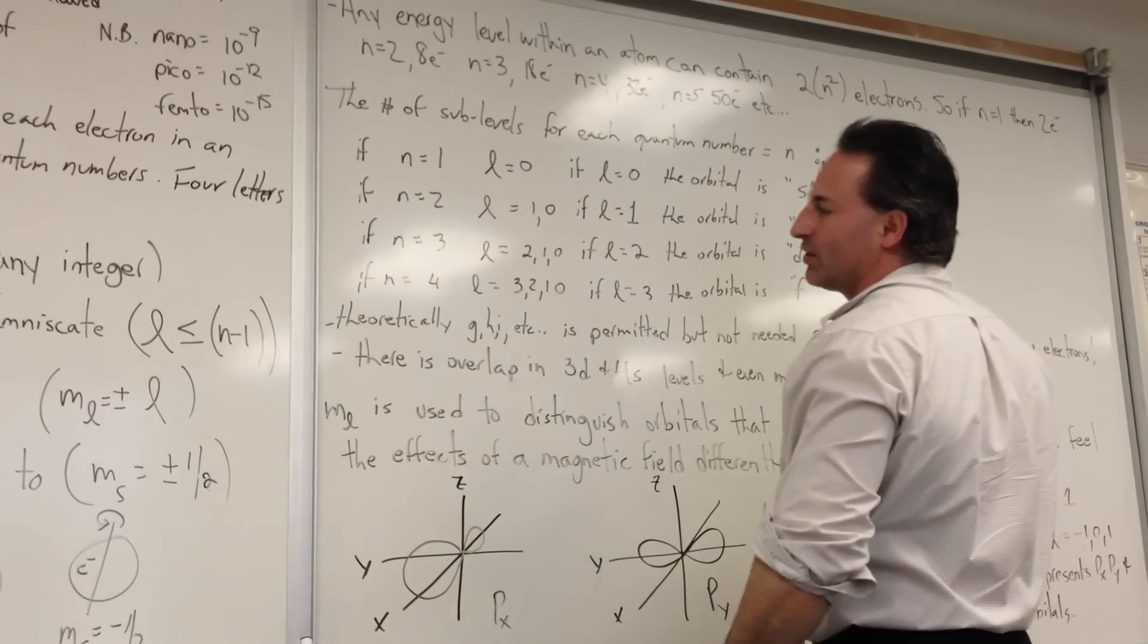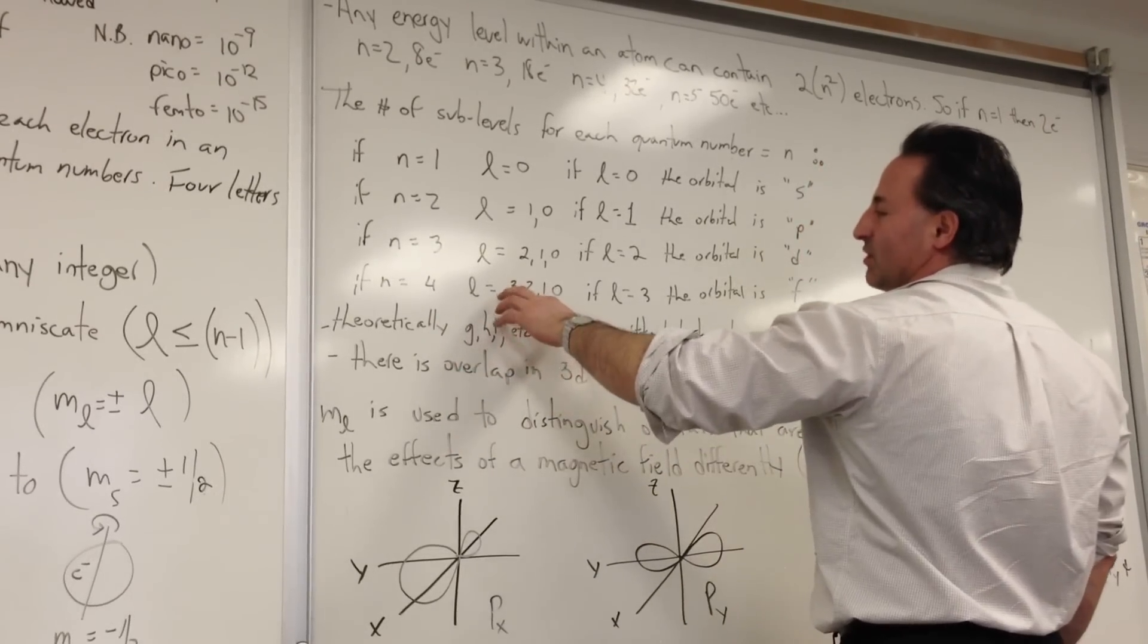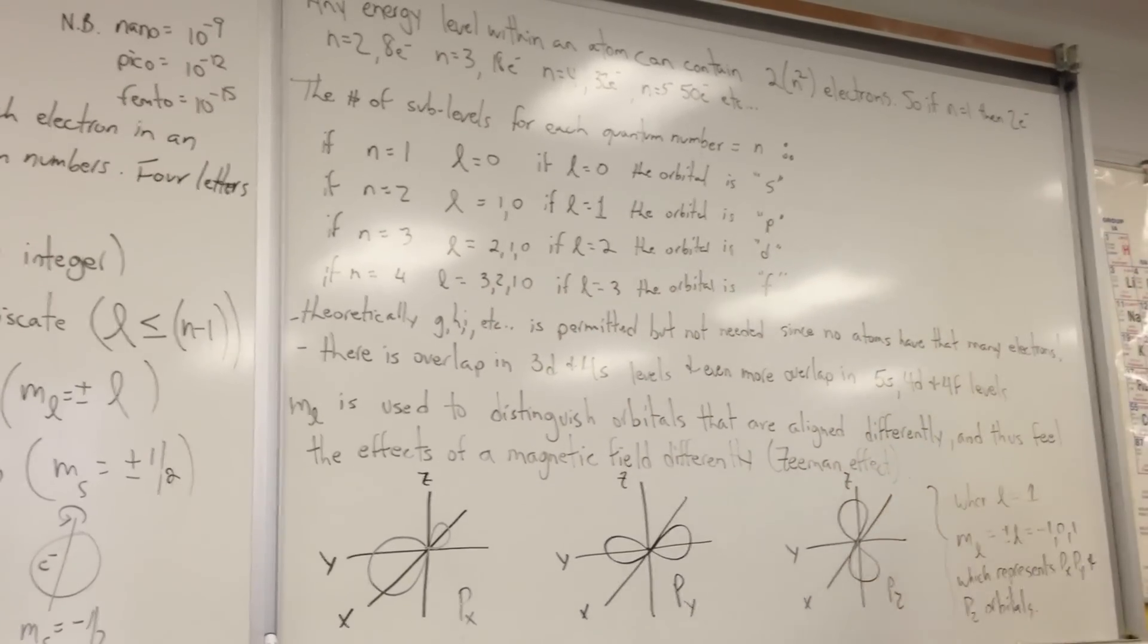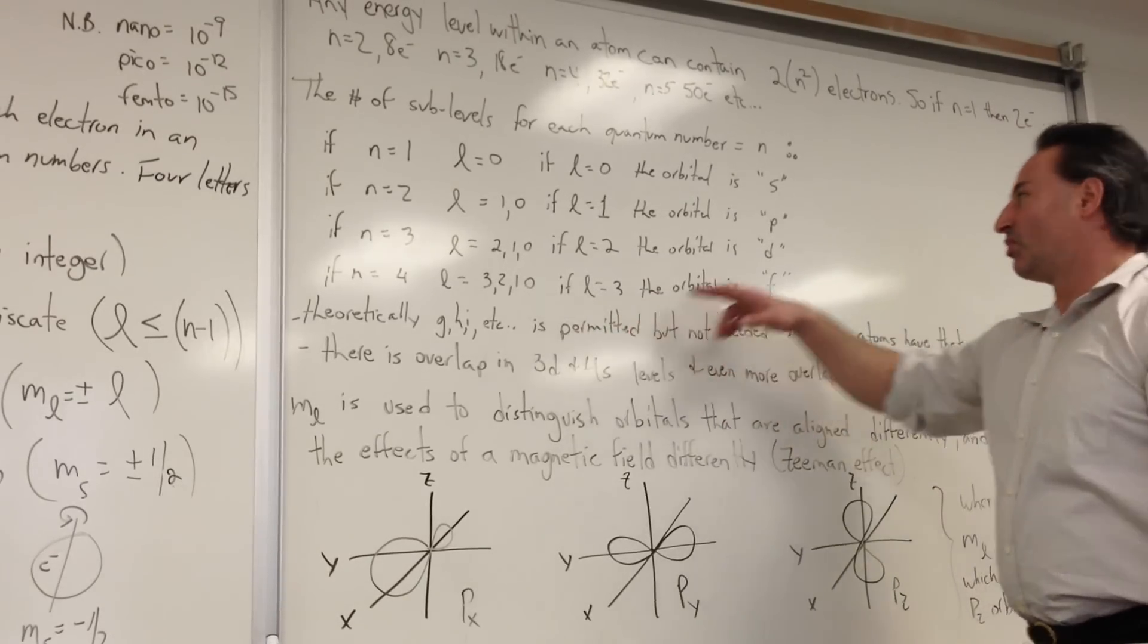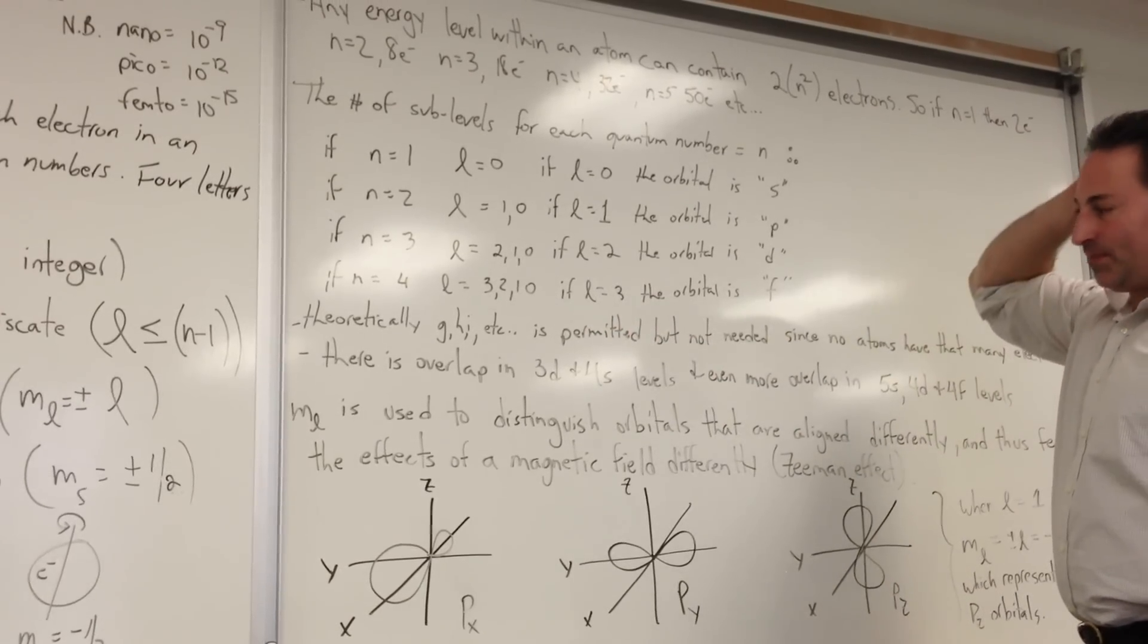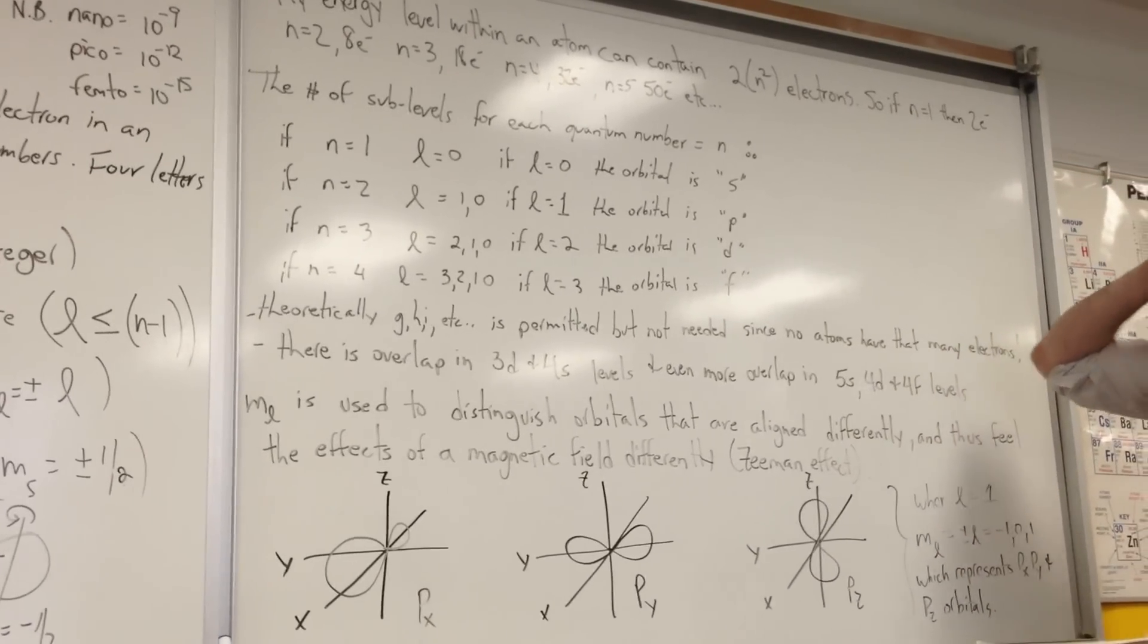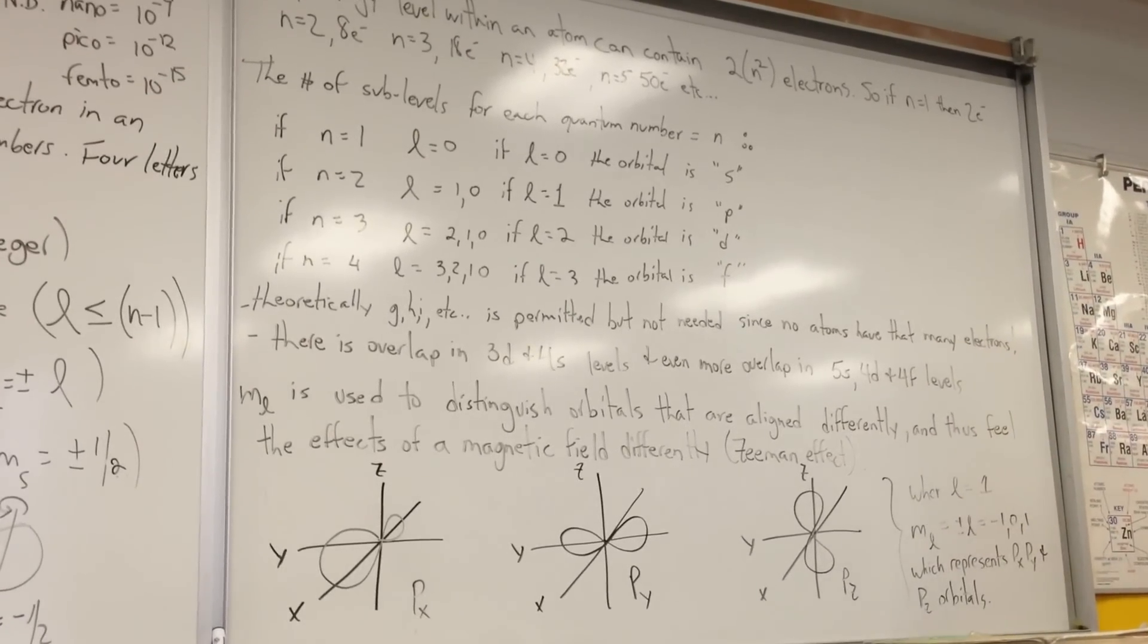If the principal quantum number is 4, the principal values of L are 3, 2, 1, and 0. And when L equals 3, the orbital is an f-orbital. And when the principal quantum number is 4, you can also have all these other orbitals in there. Theoretically, g, h, and i orbitals are possible, but not needed, because no atoms have that many electrons.